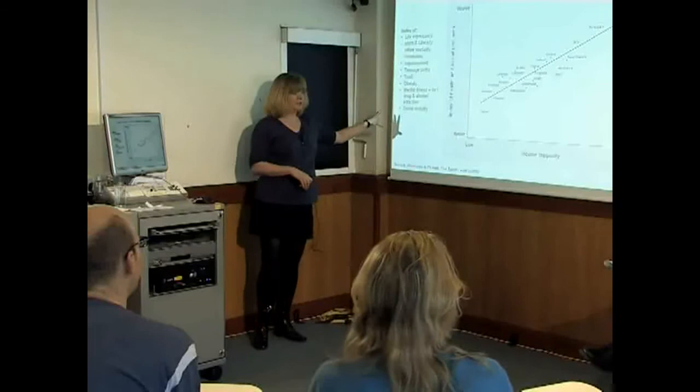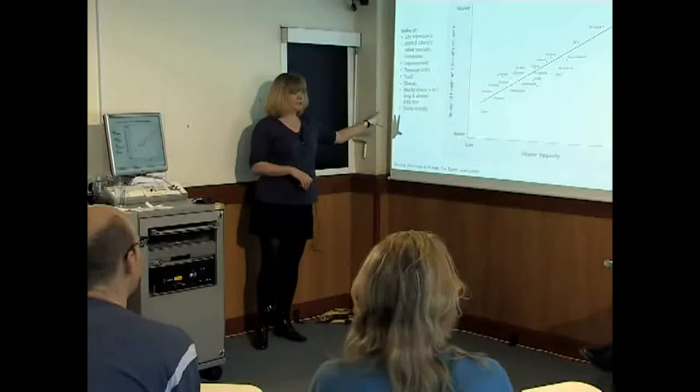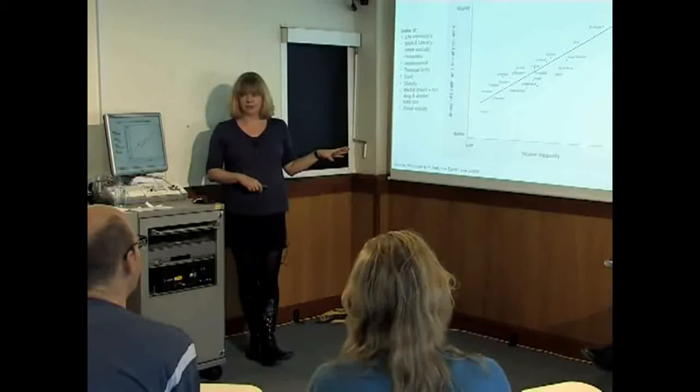We've got 10 different things and we have comparable data on these for 21 rich countries. Here are the 21 rich countries, shown in relation to income differences. At this end of the scale are countries that have small income differences, so they're more equal, and at that end they have higher income differences.